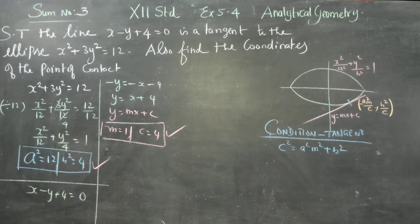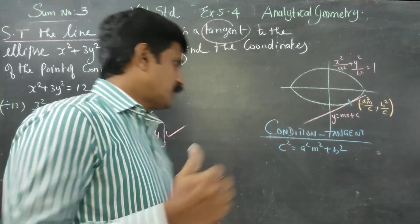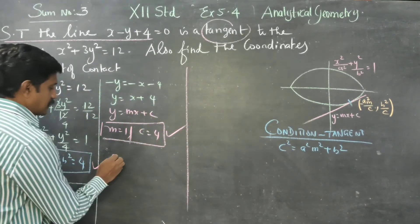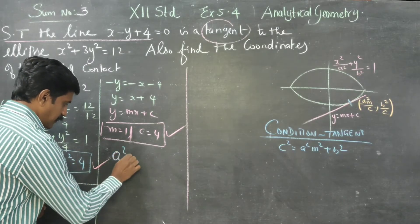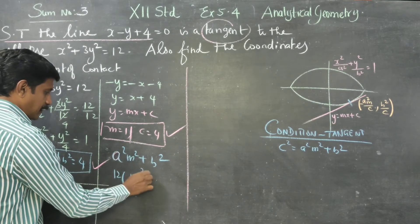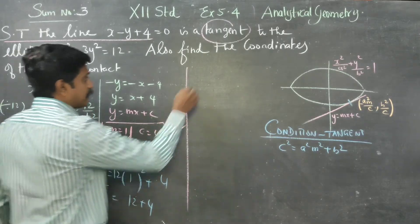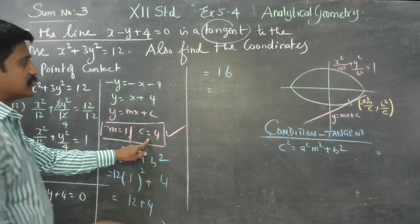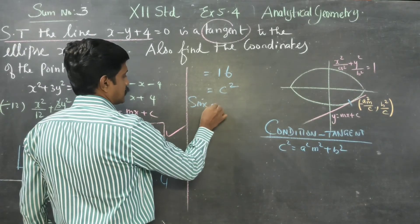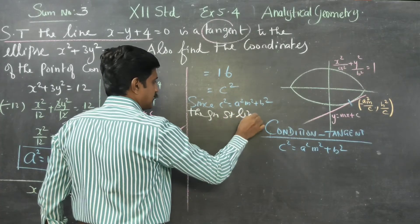I have found a², b², m, and c. They are asking us to check whether it is a tangent. For checking, LHS must equal RHS. Starting with a²m² + b²: a² is 12, m² is 1, b² is 4, so 12 + 4 = 16. Since c² = 16 also, c² = a²m² + b² is satisfied. Therefore, the given straight line is a tangent.